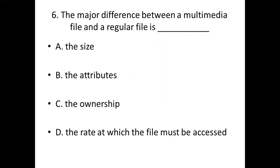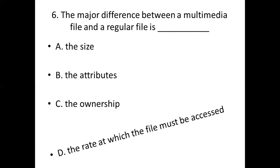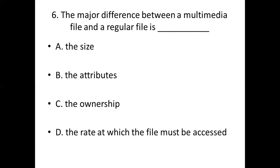Question 6: The major difference between a multimedia file and a regular file is dash. Option A: the size. Option B: the attributes. Option C: the ownership. Option D: the rate at which the file must be accessed. Answer: Option D, the rate at which the file must be accessed.